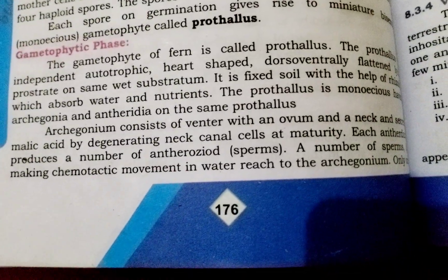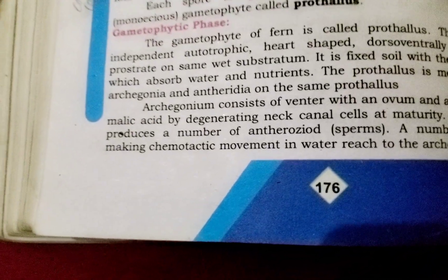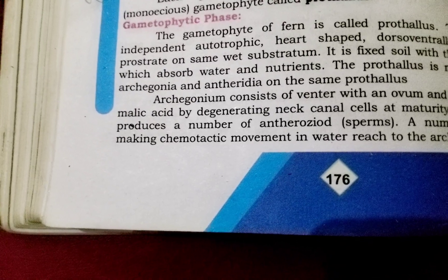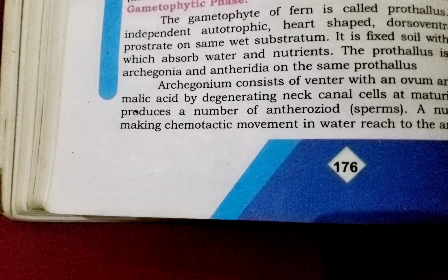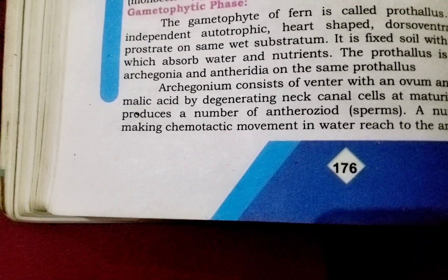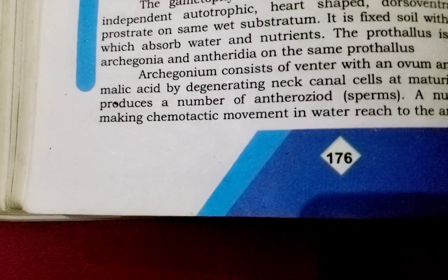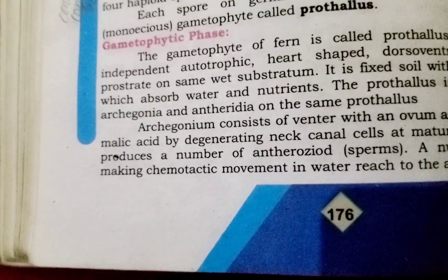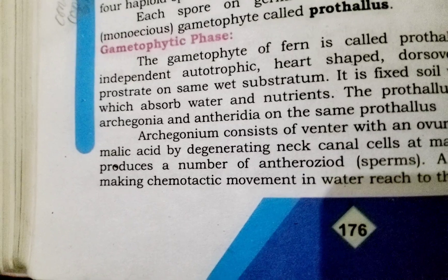The archegonium consists of a venter with an ovum and a neck, and secretes malic acid by degrading neck canal cells at maturity. Each antheridium produces a number of antherozoid sperm cells. A number of sperm make chemotactic movements through water to reach the archegonium.